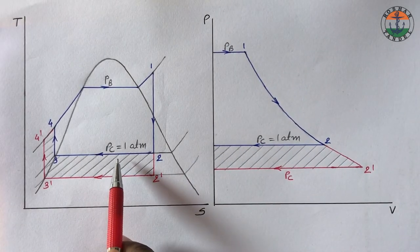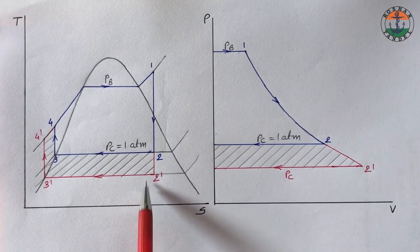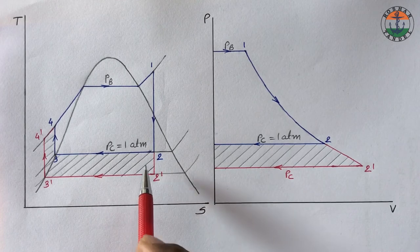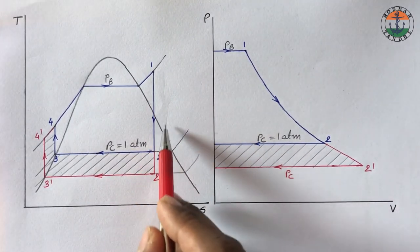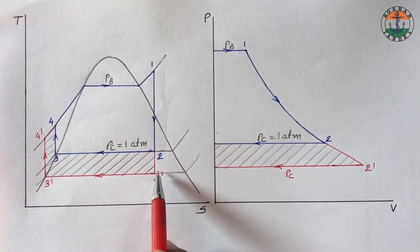If you decrease the pressure in the condenser from 2 to 2 dash, turbine work will increase from H1 minus H2 to H1 minus H2 dash.